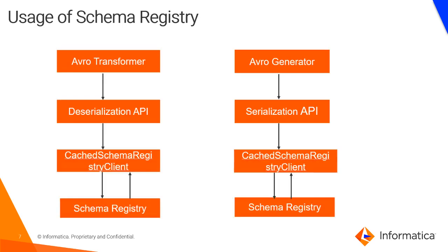This diagram shows how the schema registry works. On the source side, an Avro transformer calls the deserialization API when parsing Avro data. The deserialization API checks the cached schema registry client for the schema version. If the version is mismatched or not present, it calls the schema registry to retrieve the correct schema version, and then deserializes the data.